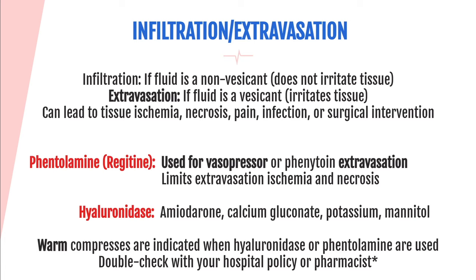Phentolamine or Regitine is used for extravasation of vasopressors or phenytoin — think P for P: pressors and phentolamine, which is spelled with a P. It can be injected directly into the extravasated IV as well as subcutaneously around the extravasated tissue. Hyaluronidase is used for extravasated medications such as amiodarone, calcium gluconate, potassium, or mannitol. When using either medication, you want to use warm compresses. Always double-check with your pharmacist or hospital policy.